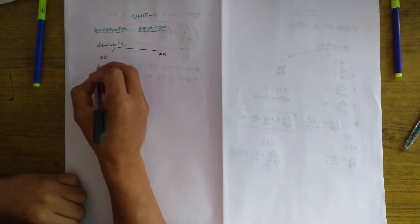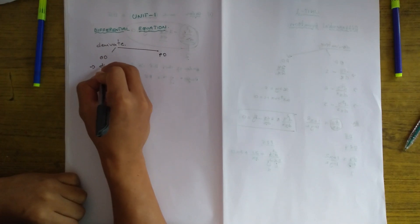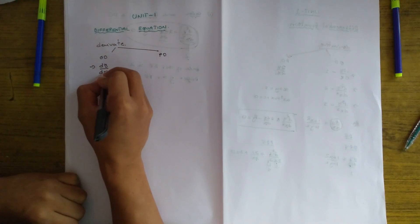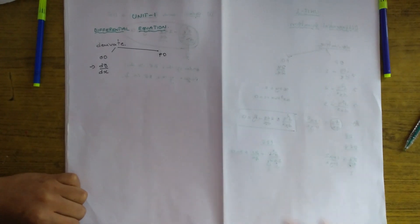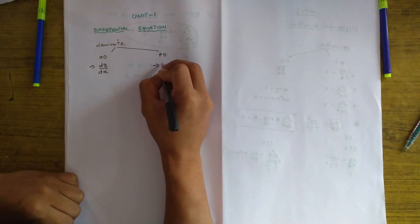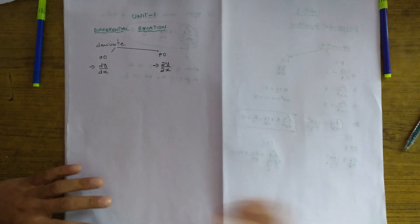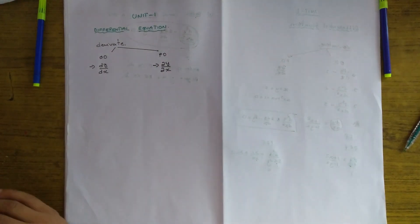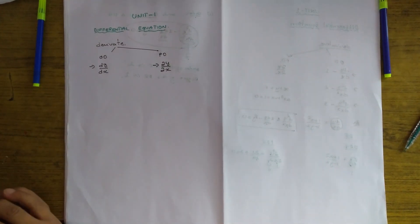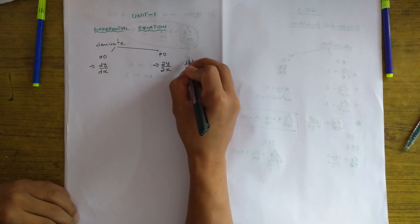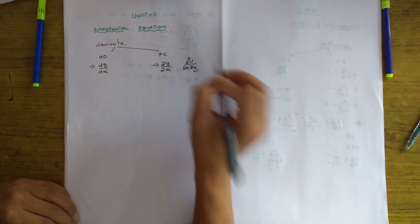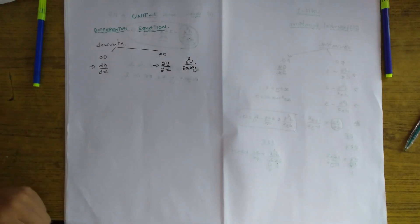In an ordinary derivative we can write it as dy/dx — you have a function y and you are differentiating with respect to x. This is an ordinary derivative, but in a partial derivative you write it as ∂y/∂x. In an ordinary derivative we always have one independent variable, but in a partial derivative we can have more than one independent variable, such as ∂²u/∂x∂y, where x and y are two independent variables.